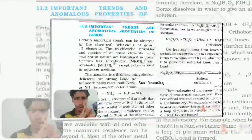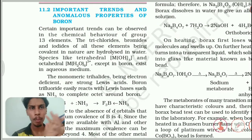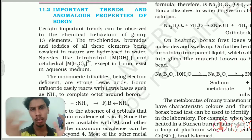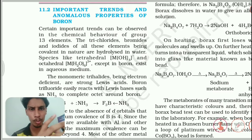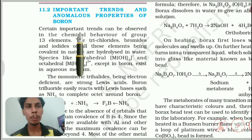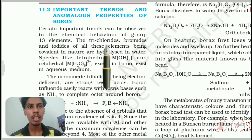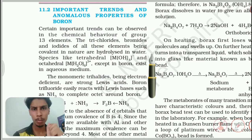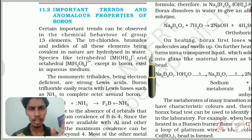Now we are going into an important topic: important trends and anomalous properties of boron. Anomalous means different — for example, if there are 10 students and 9 behave in one particular way but one has a unique property, we call that anomalous. Boron is going to have some exceptional behavior. The trichlorides, bromides and iodides of all group 13 elements, being covalent in nature, are hydrolyzed in water. For example, if I take BCl₃ and put it in water, it gives B(OH)₃ — everything gets hydrolyzed.